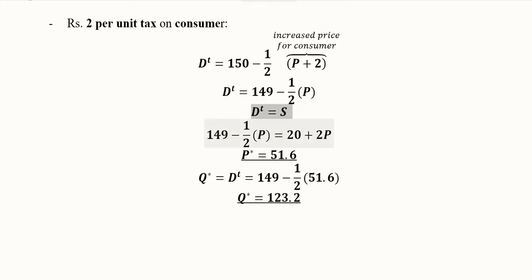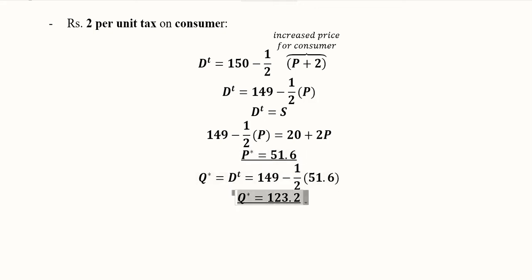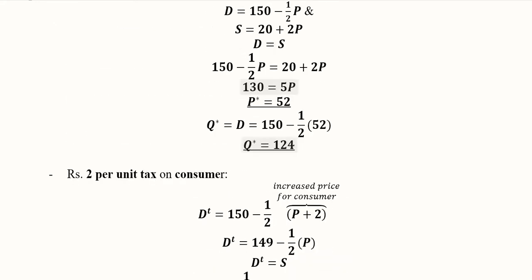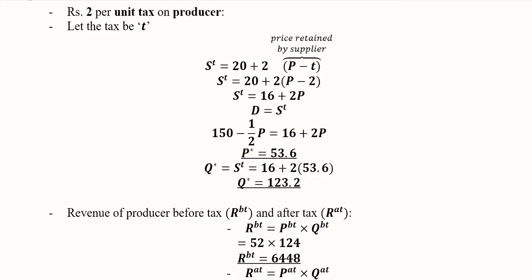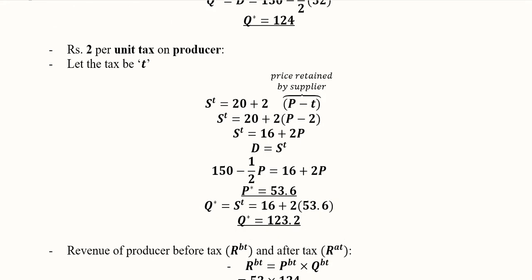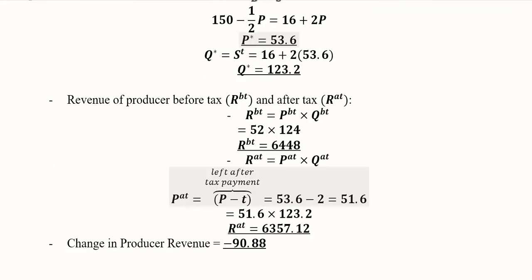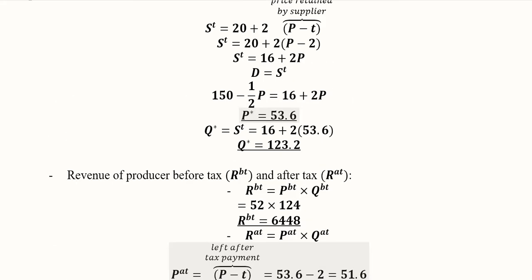We equate the new after-tax demand function with the original supply function, since no tax is imposed on the supplier in this case. This gives us the new equilibrium price and the new equilibrium output, obtained by substituting the equilibrium price into the after-tax demand function. We can also perform a revenue analysis to see how revenue has changed — increased or decreased — due to the imposition of the tax on the consumer.